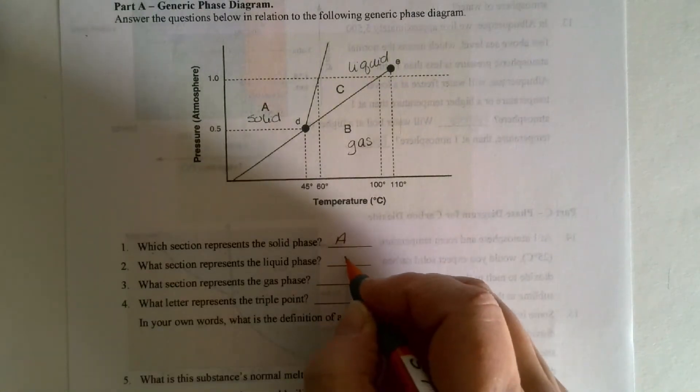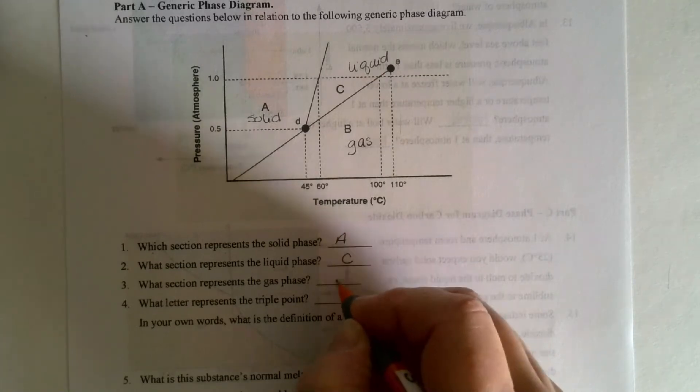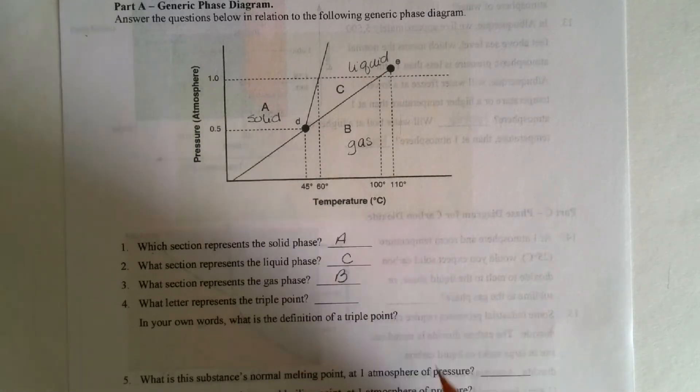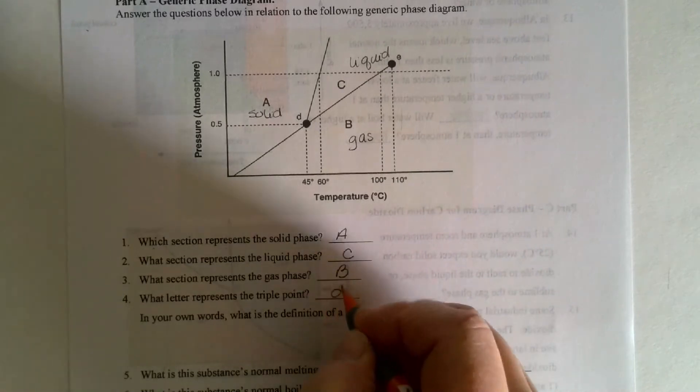What represents a liquid phase? You would write C. Gas is B. What letter represents a triple point? D.